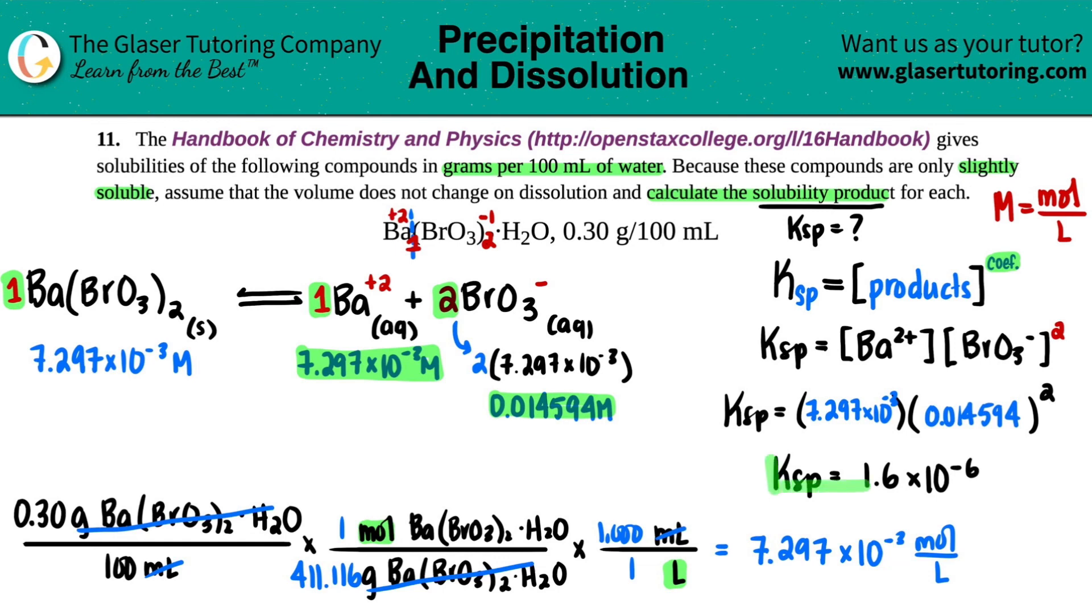And that's it. Ksp, no units. So it's just 1.6 times 10 to the negative six. I really hope this helped you out. Let me know in the comments, subscribe to the channel. We also have physics and math videos with more subjects coming your way in the near future. Thank you so much for your support and I'll talk to you later. Bye-bye.